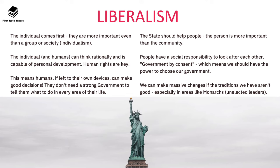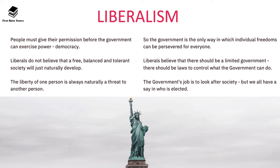The role of the state is to help us all as individuals, and the state should put the person at the centre of everything — the person is more important than the community. People have a social responsibility to look after each other. Therefore liberalism believes in government by consent, meaning we should have the power to choose our government. Contrary to conservatism's need to protect traditions and institutions like the monarchy, the liberal perspective believes that if necessary we can and should make massive changes to traditions that aren't good or aren't serving us, such as overhauling unelected leaders. Also, people must always be in a position to give permission before the government can exercise power, which is why democracy is so important.